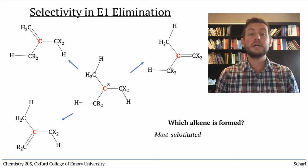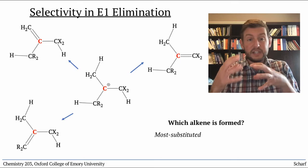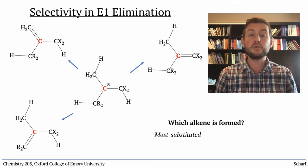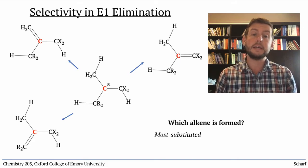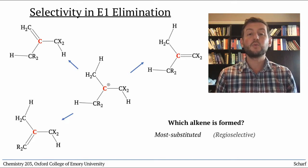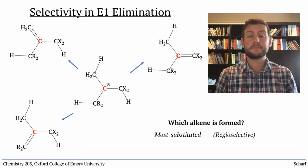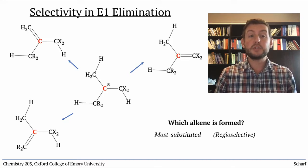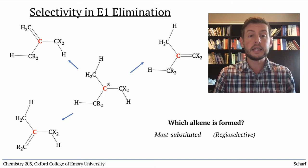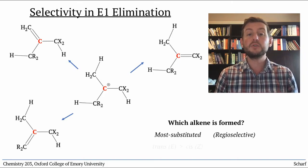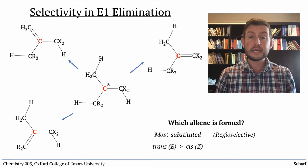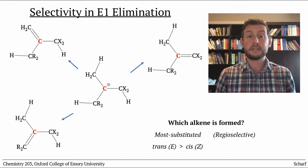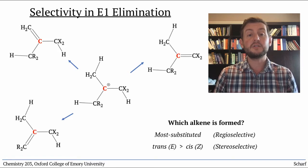Because this reaction tends to occur at a particular region of a molecule, that is, at the hydrogen that will produce a particular stable alkene, it's said to be regioselective. Similarly, since the E1 reaction tends to produce the most stable alkene, it also tends to produce trans, or E, alkenes. Because it favors one stereoisomer, it's said to be stereoselective.